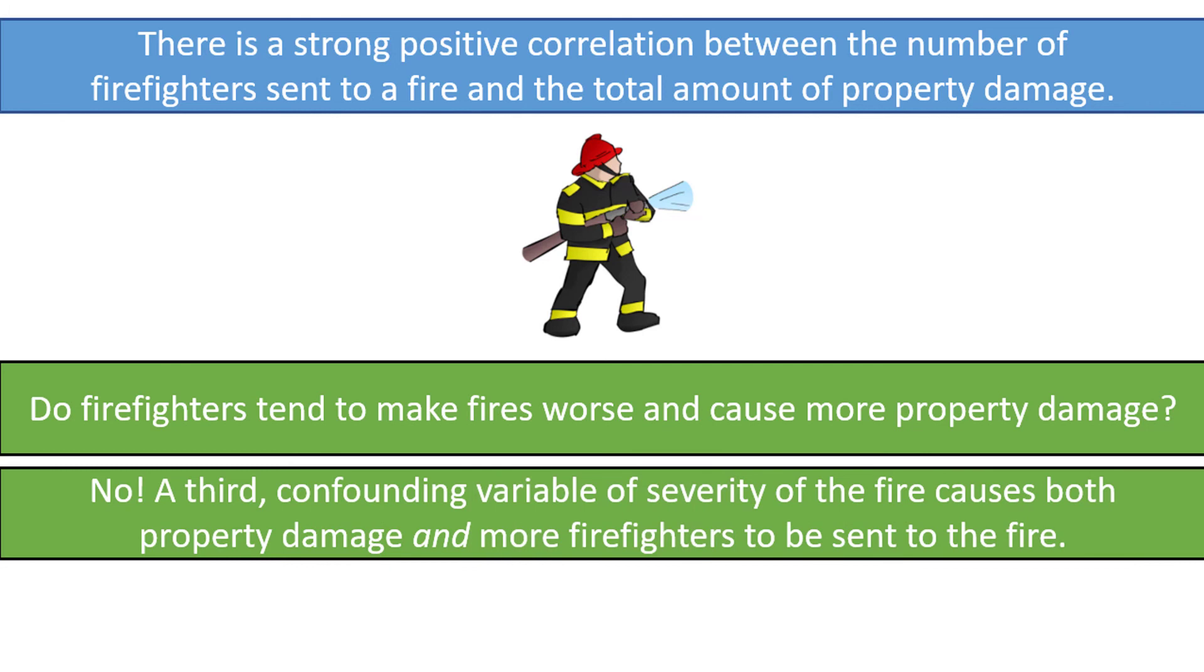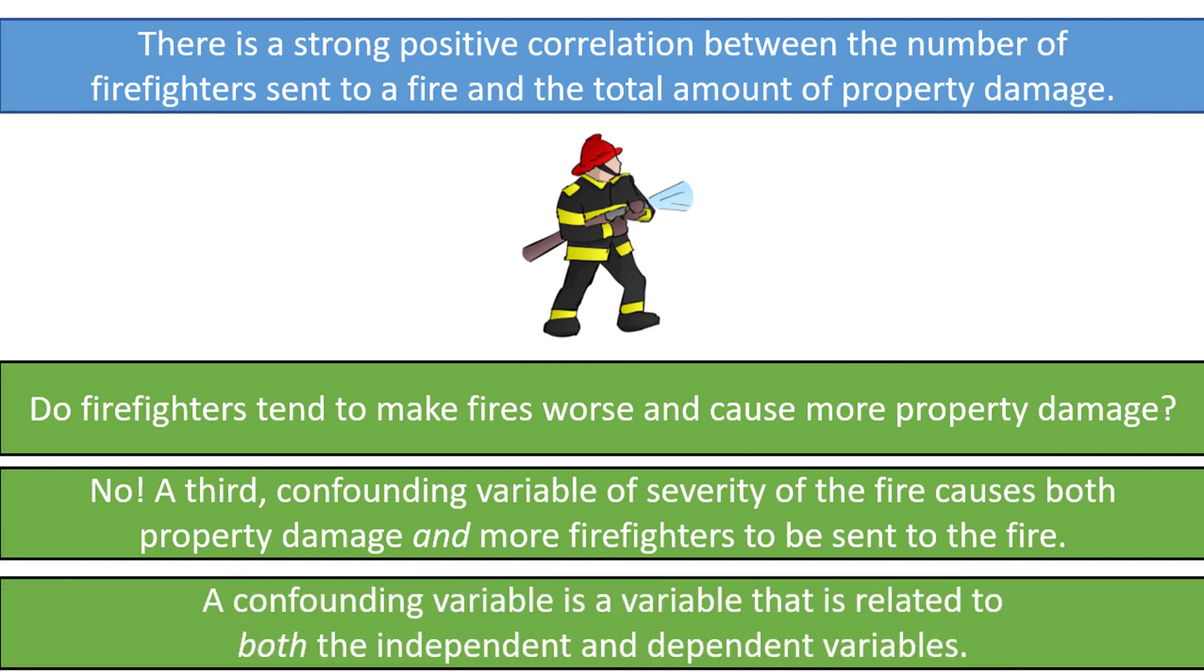There is a third variable, a lurking or confounding variable that is related to both variables, and that is the severity of the fire. More severe fires cause more property damage and cause more firefighters to be sent to the scene. In general, a confounding variable is a variable that is related to both the independent and dependent variables.